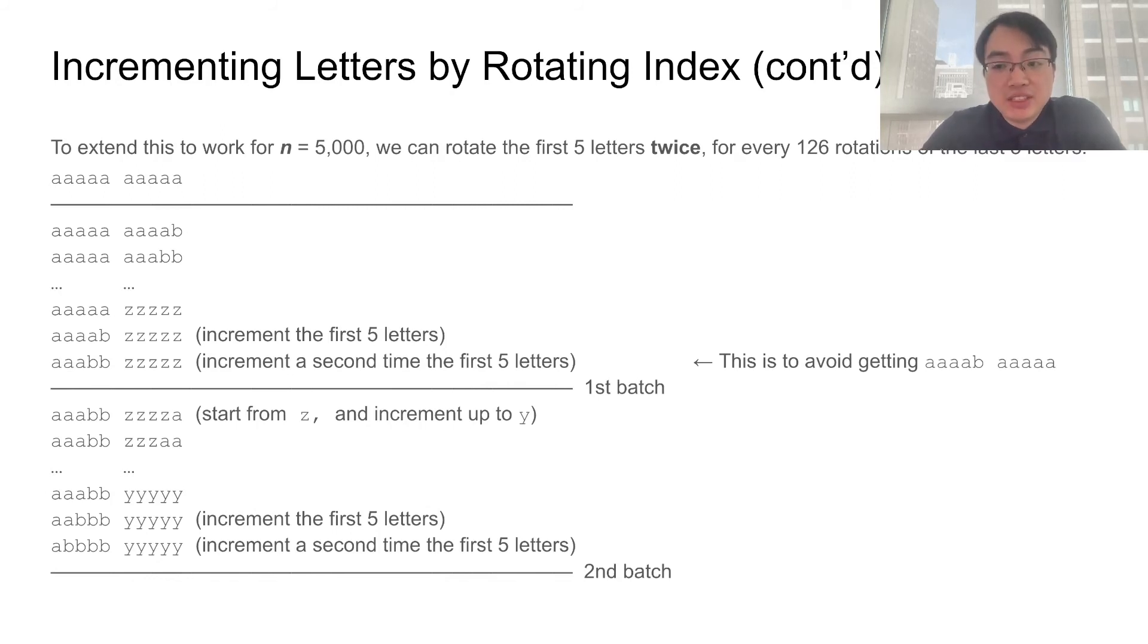The reason that we are incrementing twice the first group is because we want to avoid getting something like 4 a's, 1 b, and then 5 a's, which has exactly one letter different from our starting point. So if we increment twice the first group, we will nicely avoid this shortcut.